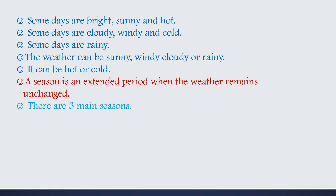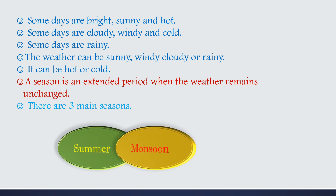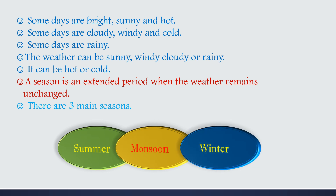There are three main seasons: summer season, monsoon season and winter season. These are the three main seasons.